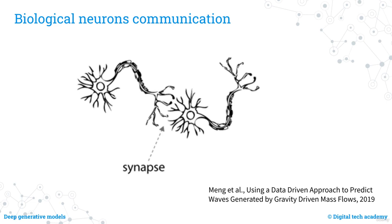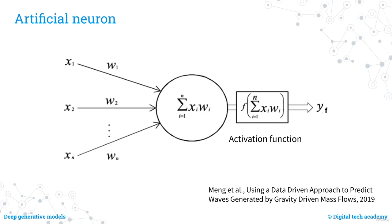The artificial neuron emulates the biological neuron. It receives multiple inputs (X1, X2, etc.) and multiplies each input by a different weight W. These weighted inputs are summed together to create a single number, which is passed through a non-linear function called the activation function. In short, the neuron takes in multiple inputs, calculates a weighted sum, applies a non-linear function, and produces a single output YF.